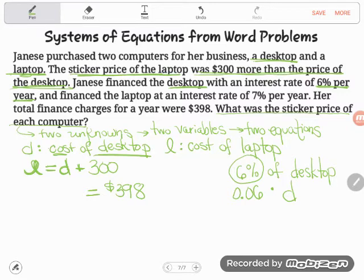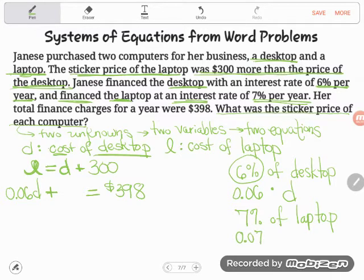But that's not the only finance charge she pays. She also has to pay, plus a finance charge on the laptop. What did it say about that? It said she financed the laptop at an interest rate of 7% per year. So what does that mean? That means that she has to pay 7% of the laptop charge every year in finance charges. So 7%. So again, 7% means 7 divided by 100 or 0.07 times the laptop. This time it's of the laptop. So it'll be times L. So that's plus 0.07L. Great. Now I have two equations, which is what I need because I had two unknowns.